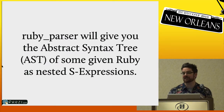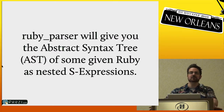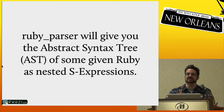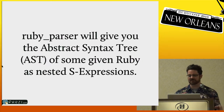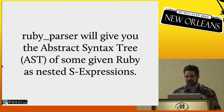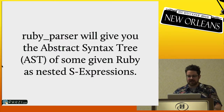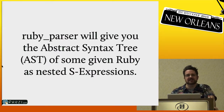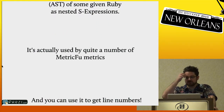Ruby Parser gives you the abstract syntax tree of some given Ruby as nested S-expressions. I don't have a computer science background — I used to be a high school physics teacher — so this was all a little scary to me. But it turns out it's not so bad. When I first got into it I thought 'this is kind of like Lisp.' The cool thing is, if you dig around inside the guts of Ruby Parser, it will tell you line numbers, which is awesome.